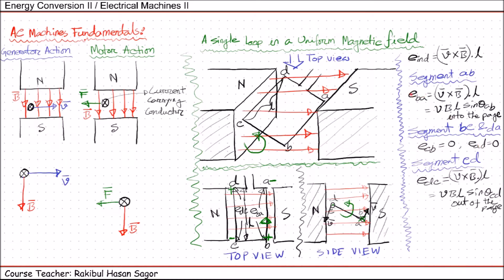Hence the total induced voltage will be E_BA + E_CB + E_AD + E_DC. Since the BC and DA terms are zero, the total induced voltage equals E_BA + E_DC, which gives VBL sin(θ_AB) + VBL sin(θ_CD).